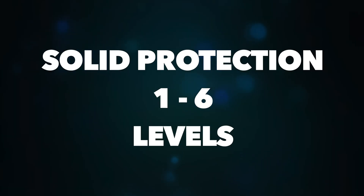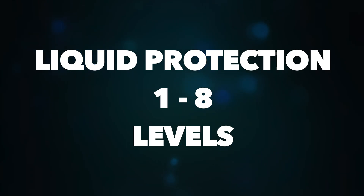These digits represent different levels of protection. Solid protection has levels 1 to 6, and liquid protection has levels 1 to 8. Let's look at how each level differs from the others, starting with solid protection.